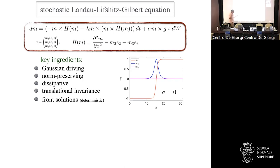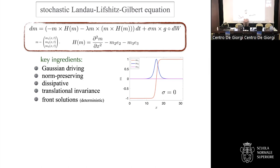There's a translational invariance, and in the deterministic case — when the noise term is zero — it has front solutions. One front solution is plotted here: m1 is a tanh, m2 is a sech, and m3 is a stable solution. The question is: what happens to this solution when we switch on the noise?